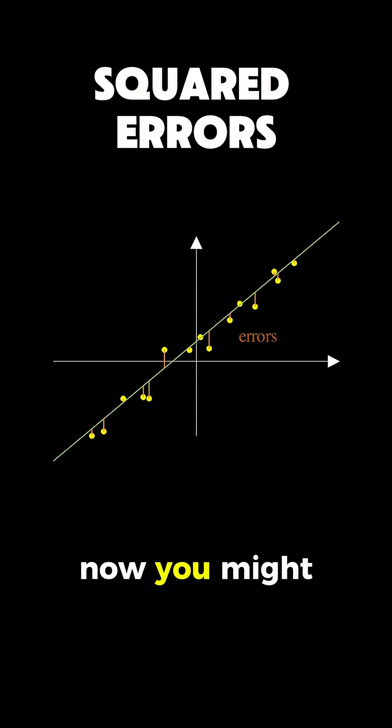Now, you might wonder why we don't just add up all these errors to get a total error score, but there's a problem with that approach, because some errors are positive when points are above the line, and others are negative when points are below, so they could cancel each other out and give us a false sense of accuracy.